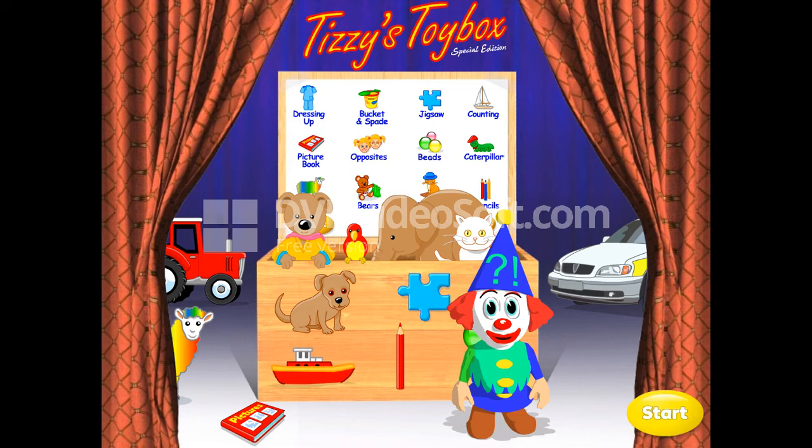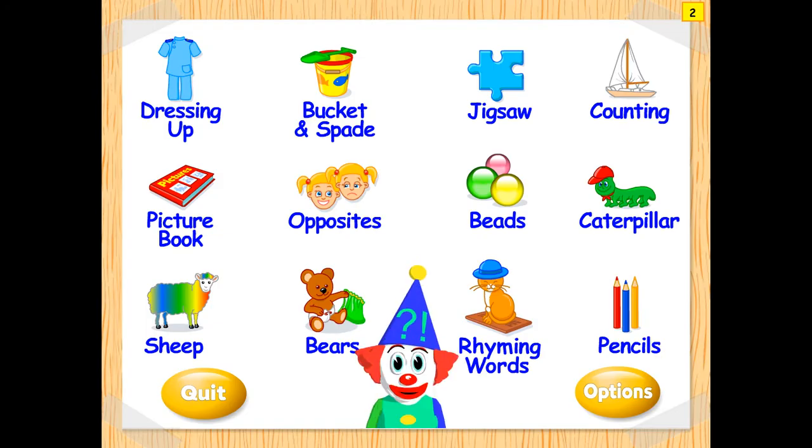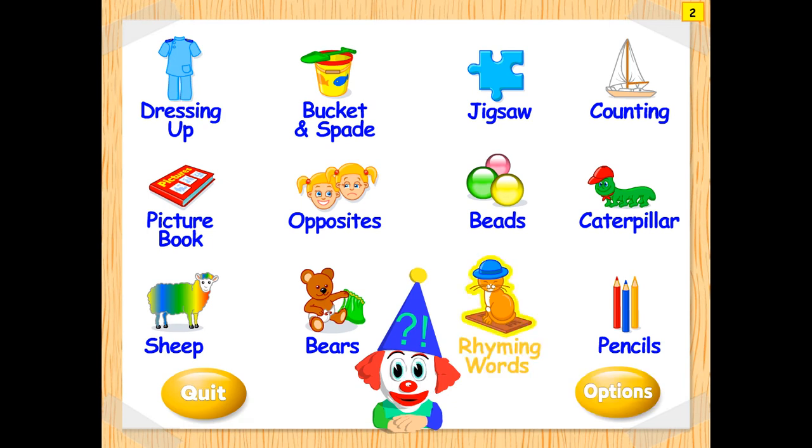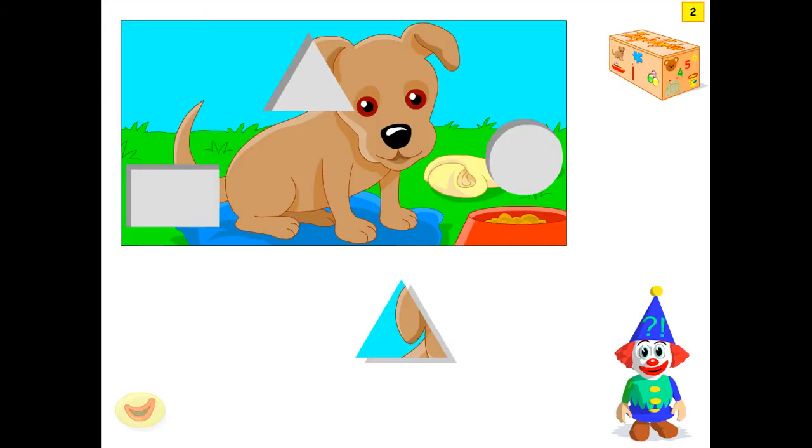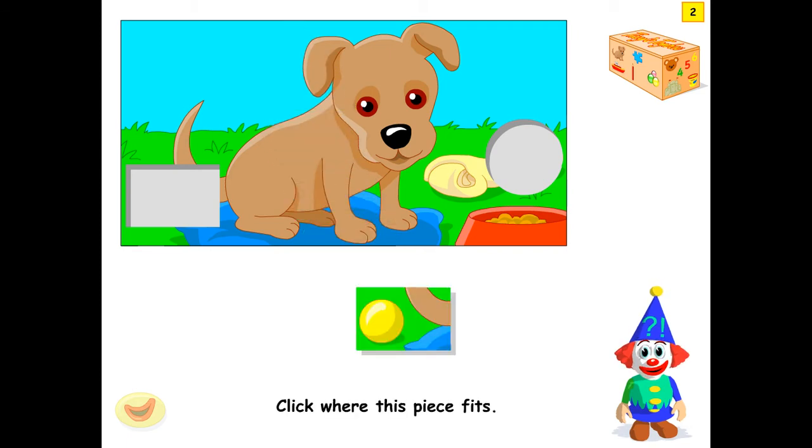So from there, choose the game. Today we are going for the jigsaw. Click on it. This is basically for the shapes. For this one, triangle for kids, you will click here triangle. You will complete the picture using different types of shapes.